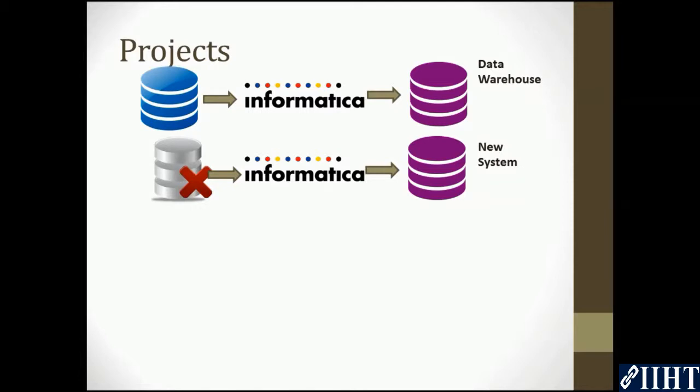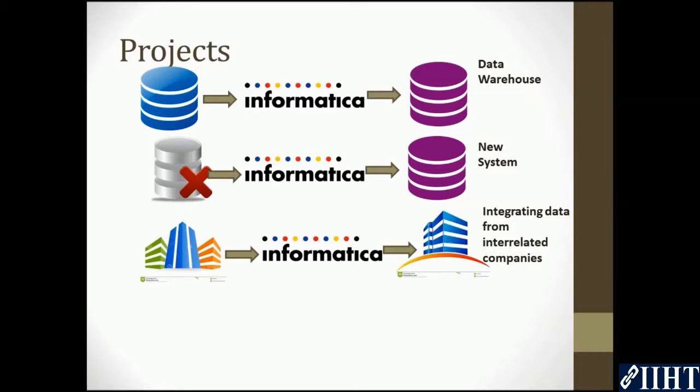Another example of the projects which Informatica can be used in is integrating data from interrelated companies. For example, a construction company acquires a smaller construction company. All the employees now have to work as a single entity under a single name. This merger entails the merger of data from both the companies. The HR department needs to know how many people are working for them now. So to do this, we need to use an ETL tool such as Informatica to extract data from the two separate sources and bring them into a single centralized data warehouse.